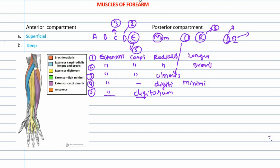The remaining 2 muscles of the superficial plane of the posterior compartment are: 'A' for anconeus and 'B' for brachioradialis. If you stay focused, you will never forget the 7 muscles of the superficial plane of the posterior compartment.